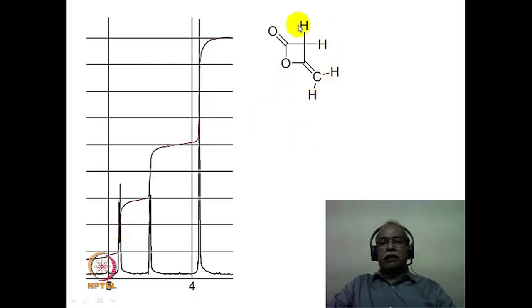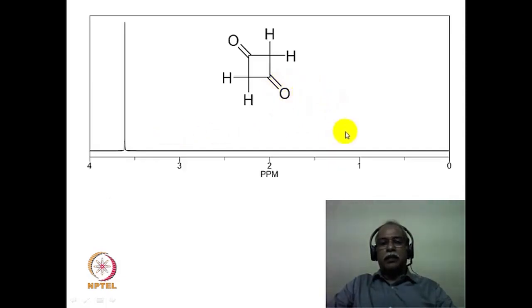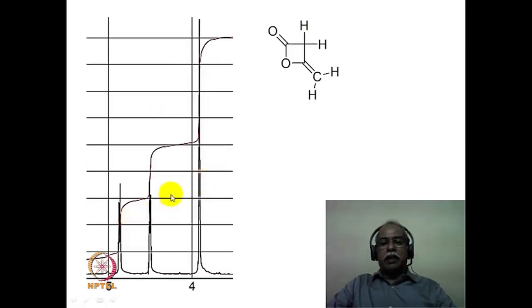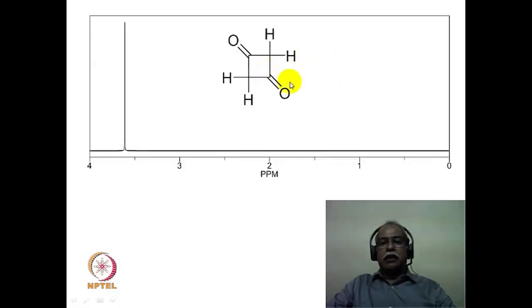So essentially the ketene dimer spectrum would match only with the unsymmetrical diketone structure, not the lactone structure. In fact, the structure of the symmetrical lactone compound and its spectrum are also shown here. Because of the highly symmetrical nature of that molecule, there is only one singlet seen for all four hydrogens around 3.4–3.55 ppm. The three different chemical shift values confirm that the unsymmetrical structure is the correct dimer of ketene.